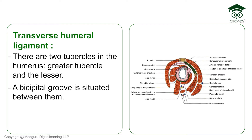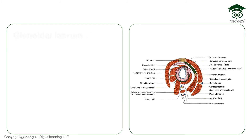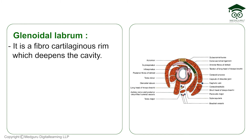The fourth ligament is the transverse humeral ligament. The humerus has two tubercles — greater and lesser — with the bicipital groove between them. This ligament extends between the two tubercles, covering the bicipital groove, and the tendon of the long head of the biceps passes deep to this ligament. The fifth ligament is the glenoid labrum — a fibrocartilaginous rim that deepens the glenoid cavity.